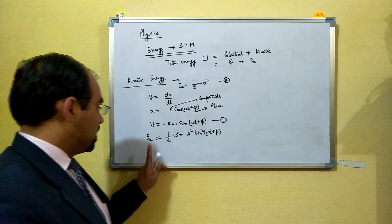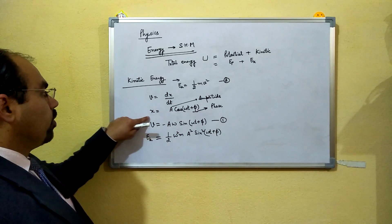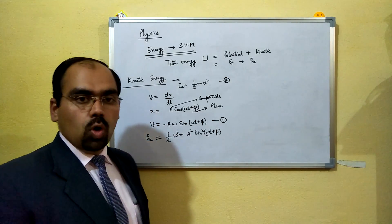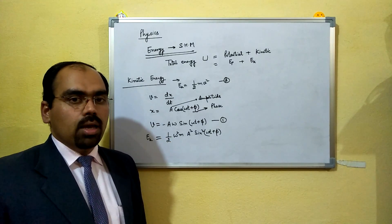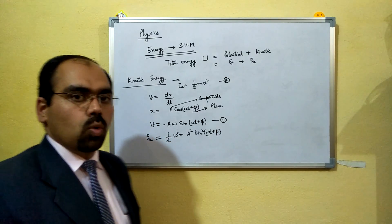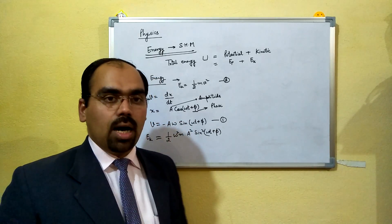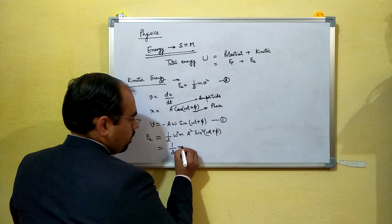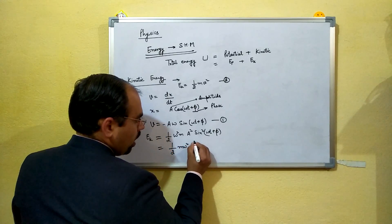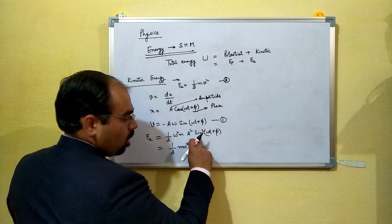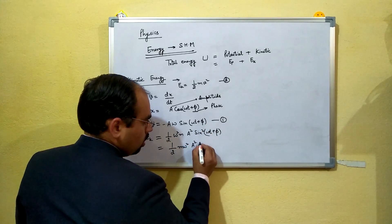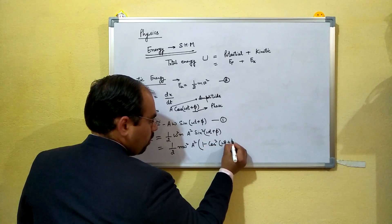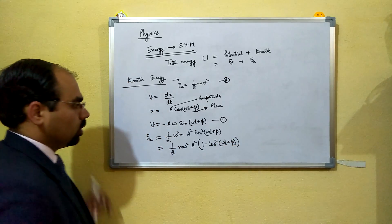We need to convert our sine function into cosine so that we can represent kinetic energy in terms of displacement. Using the identity sin²θ + cos²θ = 1, we write sin²θ = 1 − cos²θ. So EK becomes one half m·ω²·A²·(1 − cos²(ωt + φ)).